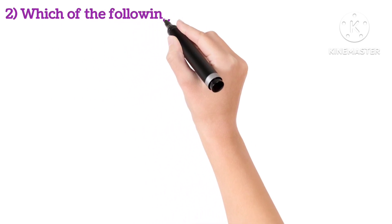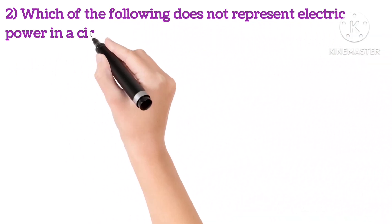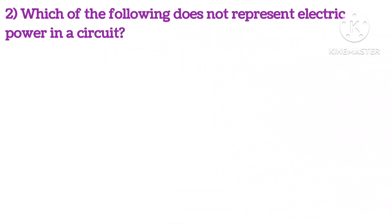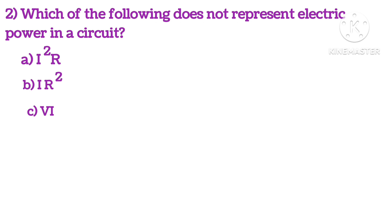Second: which of the following does not represent electric power in the circuit? I squared R, I R squared, V I, or V squared upon R.